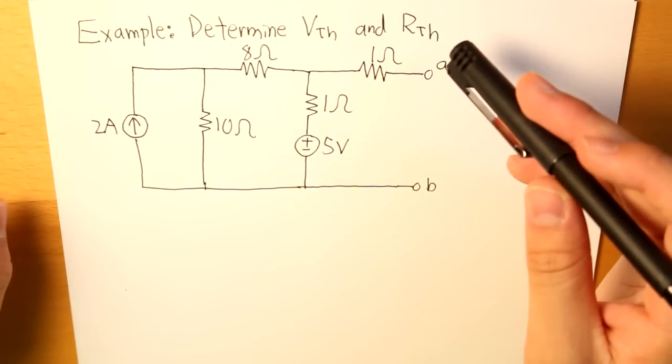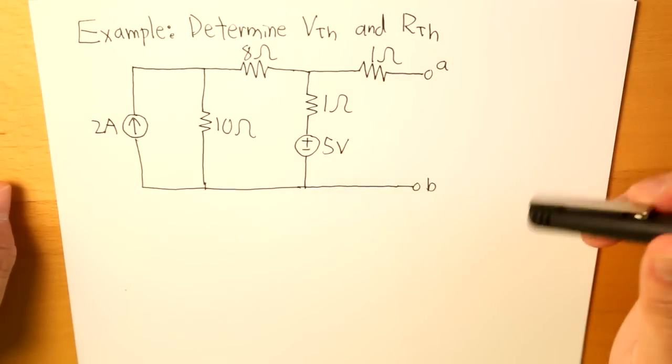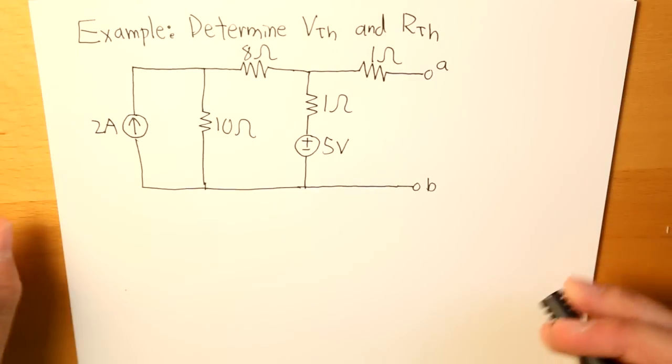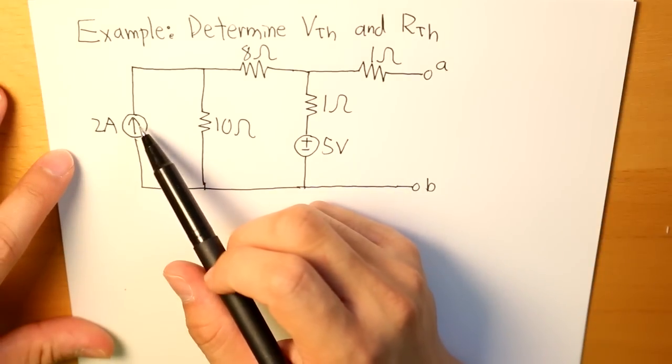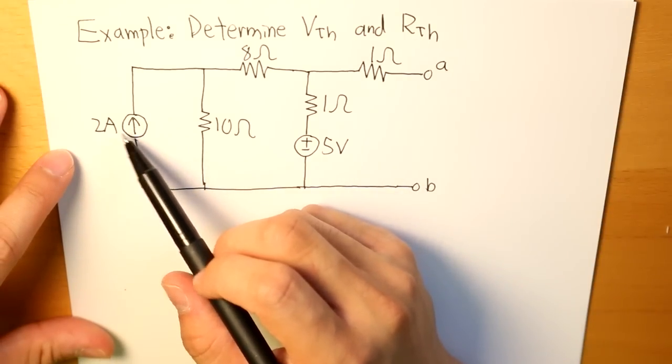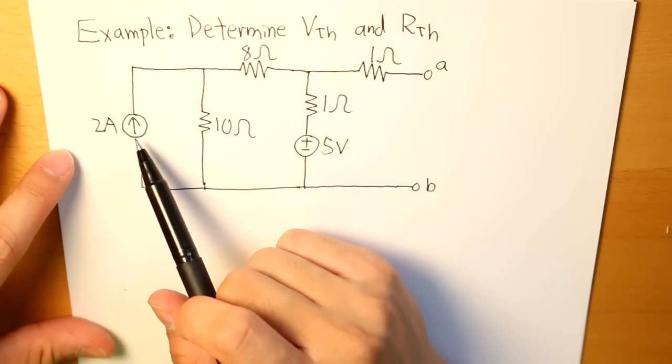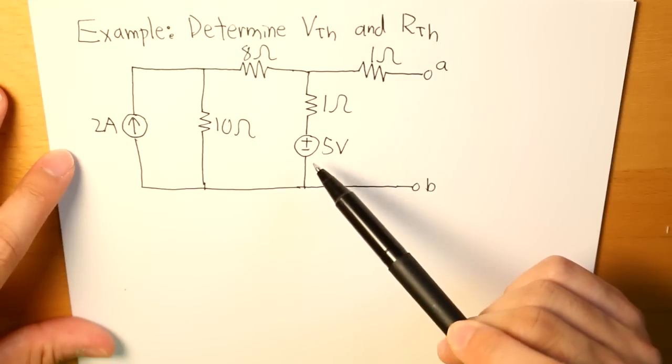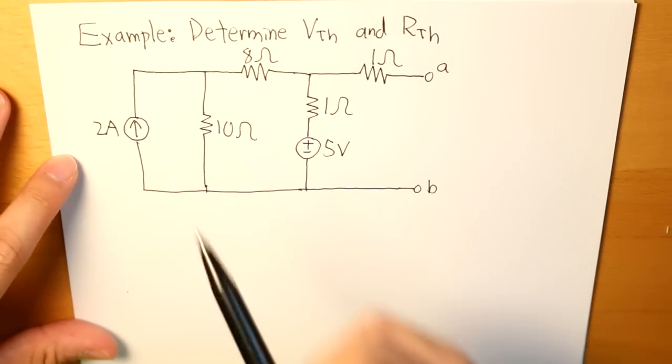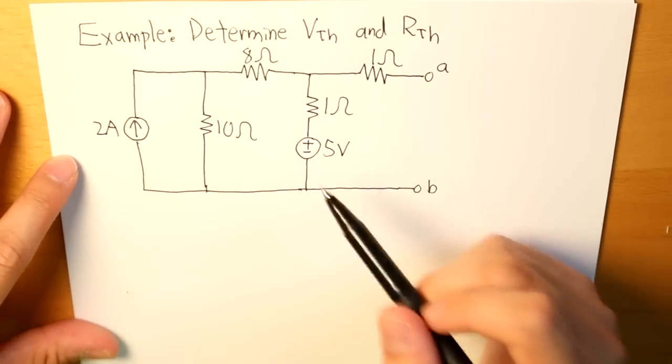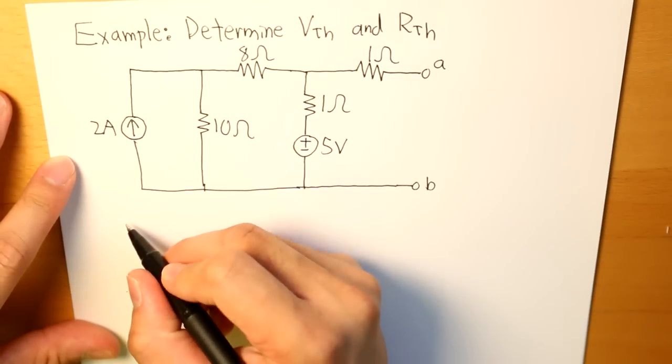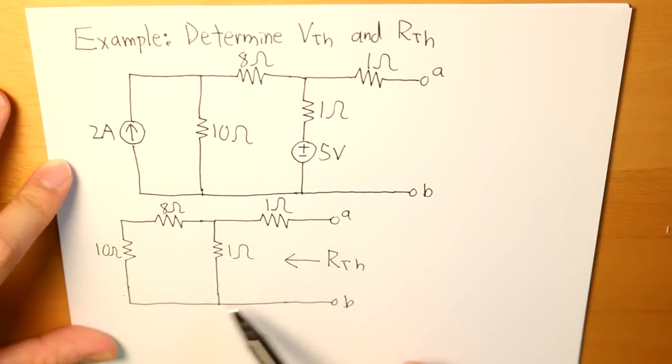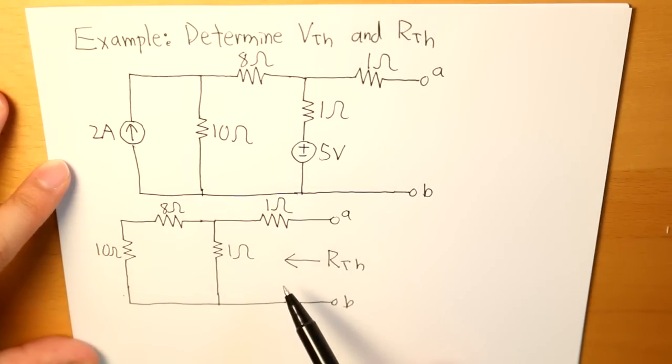So let's start to find Rth. What we do is we are going to turn off the 2 amp current source and also the 5 volt voltage source, and what we're going to get is this open and this short. And this is how our circuit's going to look like with all the independent sources turned off.